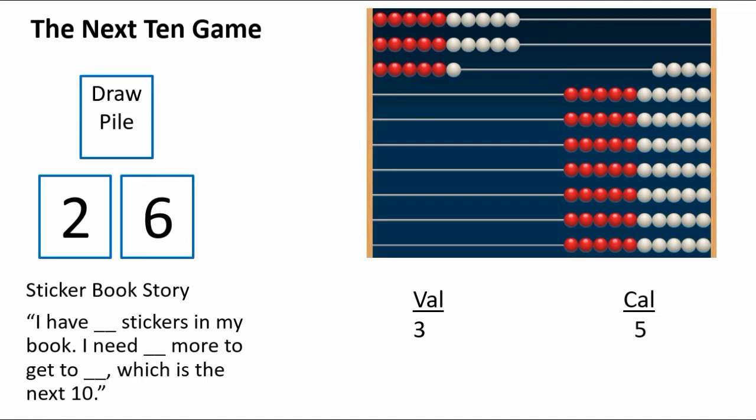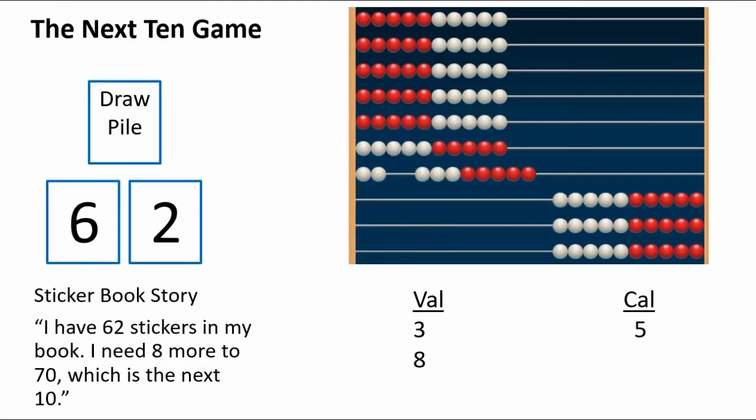Now, I kind of want more points. So if I turn this into a 62, then I will be able to know that I'm going to make more points because it's going to take more to get to the next 10, which is 70.